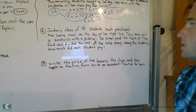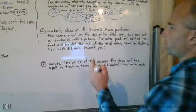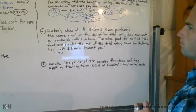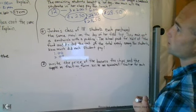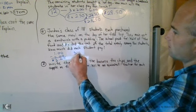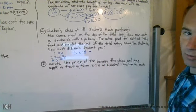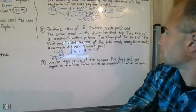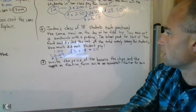Number two. Jordan's class of 18 students each purchased the same meal on the day of her field trip. They each got a sandwich with a pudding. We have pudding, which is $1. A sandwich, which is $2. So we have a sandwich and a pudding. So that's a total of $3. And there's 18 students in her class. So $3.00 times 18 students. What's that going to be? I'm going to hit the pause button to have you solve that part. So hopefully, for this part, you got $54.